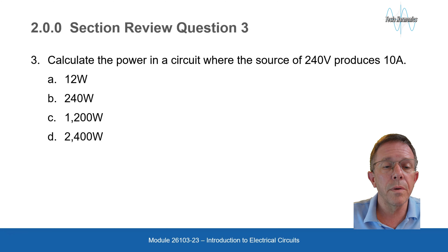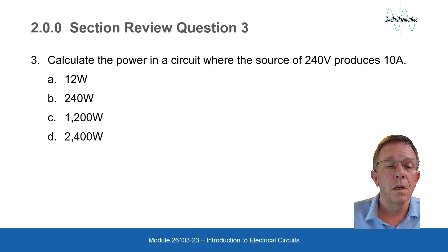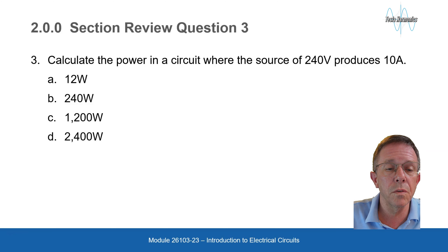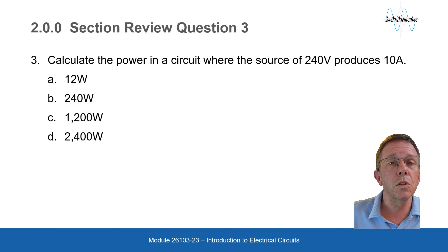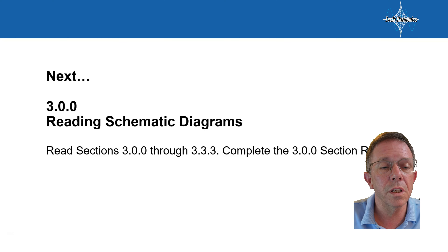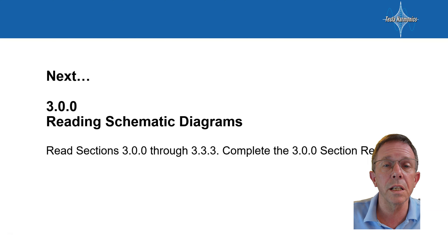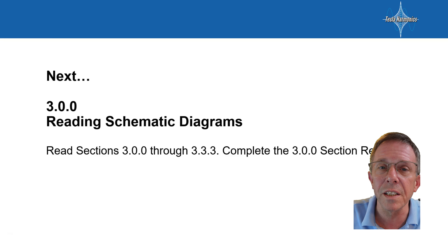Calculate the power in a circuit when the source voltage is 240 volts and produces 10 amps. Power equals current times voltage: 10 times 240 equals 2,400 watts. That's it for that section. The next section will be 3.00 Reading Schematic Diagrams, and I'll see you over there.